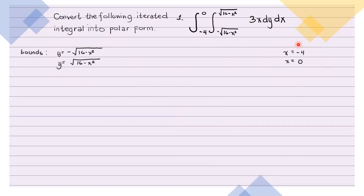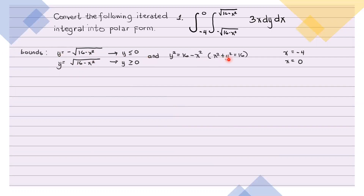Ito ngayon yung mga bounds natin for our region of integration. So identify natin kung ano-ano bang klaseng mga curves ito. Dito ay y equals negative of a square root, so ibig sabihin nyan, y cannot be positive — y is less than or equal to 0. Sa pangalawa naman, y is the square root of an expression, so y is greater than or equal to 0. Pero for both of them, kapag ni-square natin both sides, ang makukuha natin ay y squared equals 16 minus x squared, and rewriting, we get x squared plus y squared equals 16.